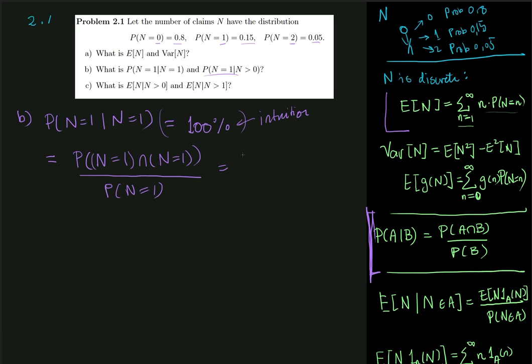The intersection of these two events divided by the probability that N is equal to 1. So this is just the intersection of one event with itself, that's just equal to itself. And we divide with the probability that N is equal to 1. And this is quite clearly 1. So that wasn't too hard.